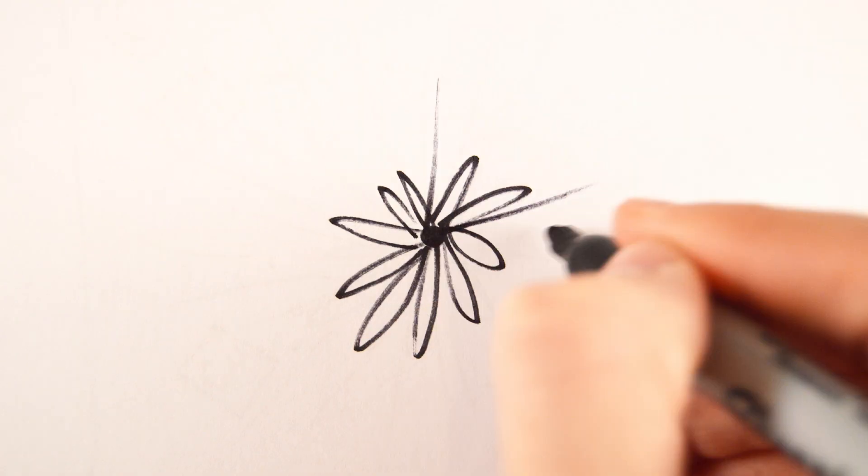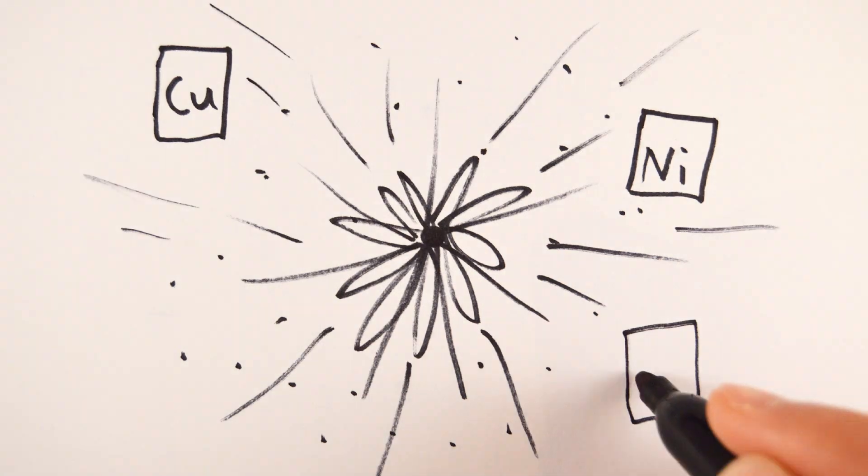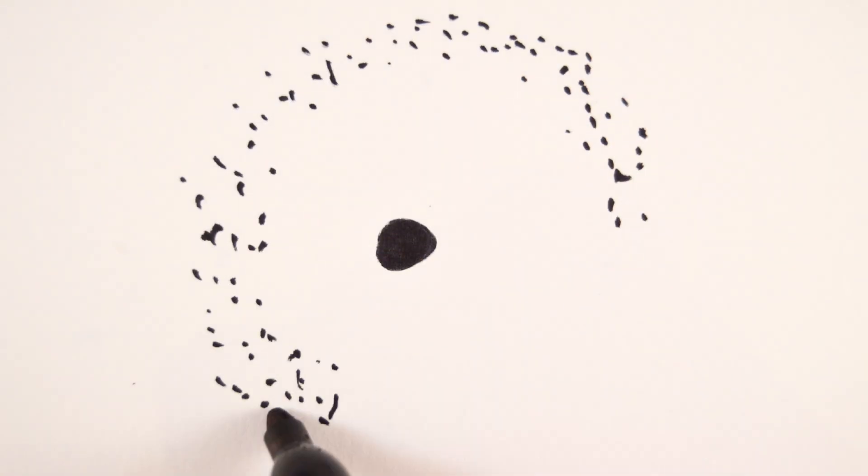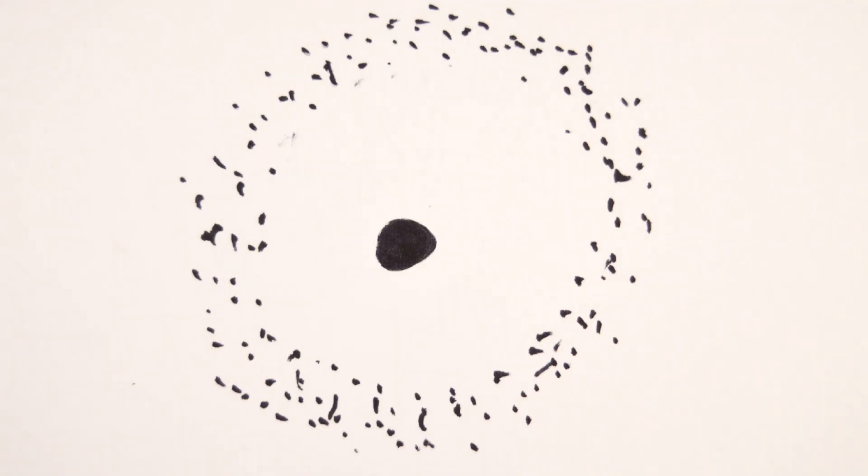But it's when they explode in a supernova that the heavier elements are formed that are found all over our planet. The exploding supernova throws out its outer layers of dust and gas into space, leaving a very dense core called a neutron star, or in some cases a black hole.